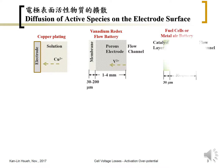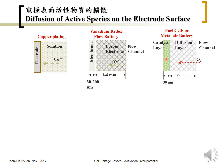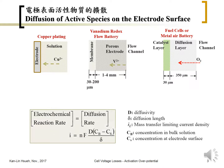For a fuel cell or metal-air battery, on the air electrode side, there is a catalyst layer and a diffusion layer, with the flow channel on the other side. Oxygen diffuses through the diffusion layer and is consumed in the catalyst layer. The concentration of oxygen is lowest in the catalyst layer and highest near the flow channel, establishing a concentration gradient across the diffusion layer. From this, we can establish the diffusion rate at steady state.